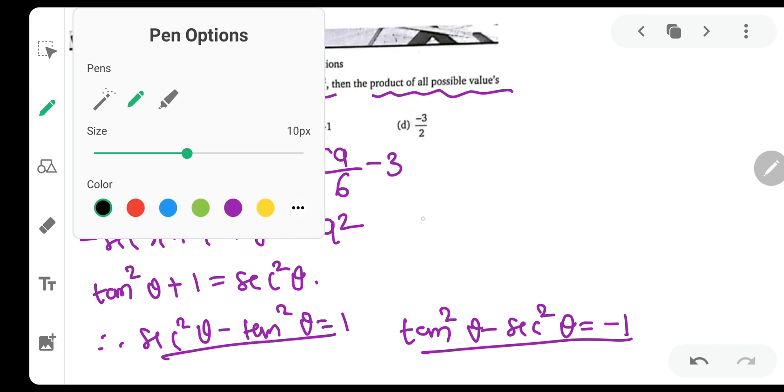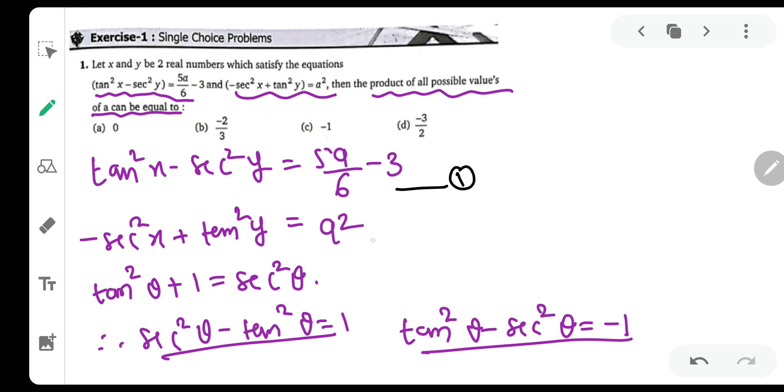So let me call this equation as 1 and this equation as 2. Let us add equation 1 and 2. So what we will get is tan square x minus sec square x minus sec square y plus tan square y equal to 5a by 6 minus 3 plus a square, since we are adding all the sides.